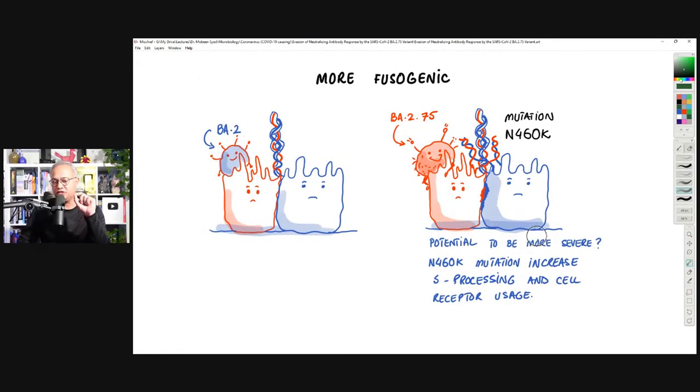That is, if you are infected with BA.2, then the chances with the BA.2.75 are still there. However, if you are infected with BA.4 and 5, reinfection with BA.2.75 is less. And it is more fusogenic. So it has on its spike protein, it has a mutation called N460K. So amino acid N at the position 460 is replaced with K. That is the mutation. This mutation has allowed this variant to create more, to become more fusogenic.